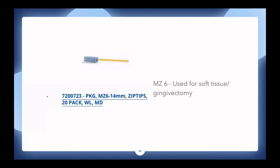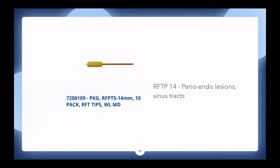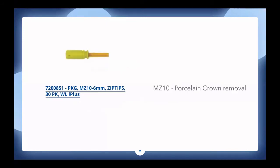With the outer diameter of 0.27mm, finishing with a .2004 file gets your tip to about one millimeter of working length. The other tip I use frequently is the MZ-6, used for soft tissues and gingivectomies. The last tip I use is the RFT-P14, used for perio treatment, perioendo lesions, and sinus tracts. I do a combination of disinfection in the canal with the RFT-2, followed by the RFT-P14 on perioendo cases, treating them in a single visit.